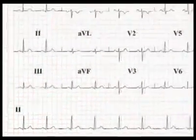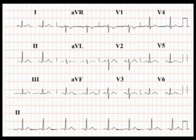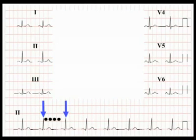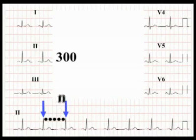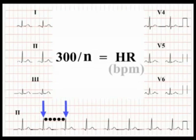Generalizing, here is a simple method for calculating heart rate from an ECG: identify two R waves on the rhythm strip, count the number of large squares between them, then divide that number into 300. Provided the heart rhythm is regular, this method gives you an accurate heart rate in beats per minute.